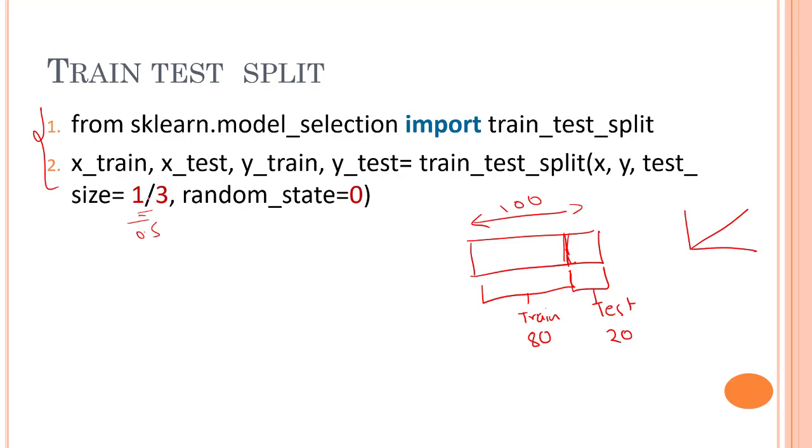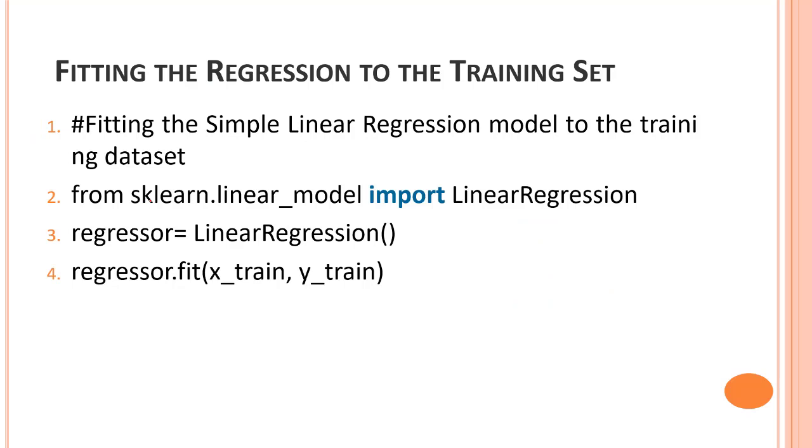Now the next part and the most important part is fitting the regression on the training set. The second step is to fit our model to the training set. To do so we will be importing the linear regression model. So we start from this line, we import from sklearn.linear_model import LinearRegression.